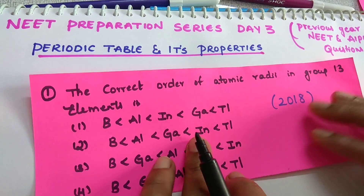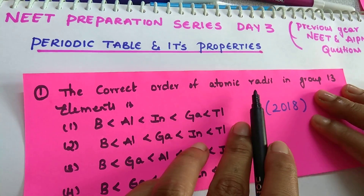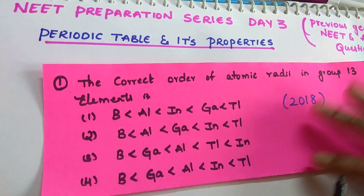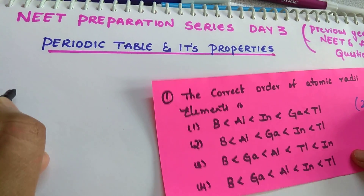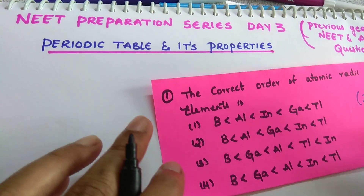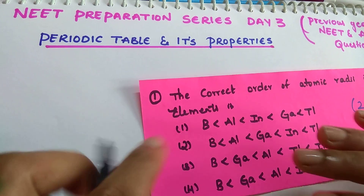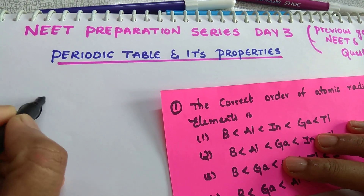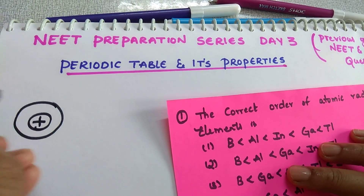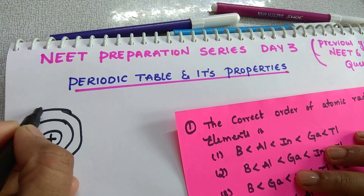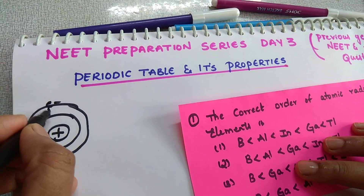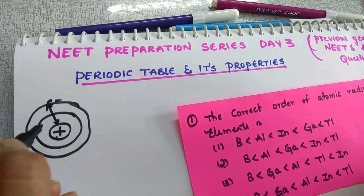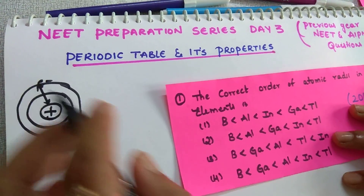See the first question. The correct order of atomic radii in group 13 elements is? What is an atomic radius? I am going to solve these questions in the easiest way. The nucleus has shells around it - for example, the first shell and the second shell where electrons are present. The distance between the nucleus and the electron present in the outermost shell is called the atomic radius.